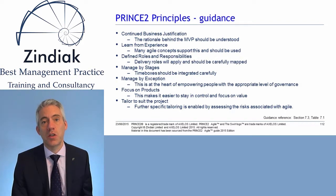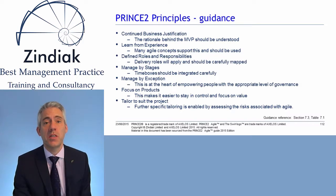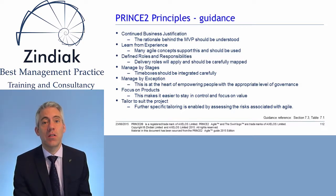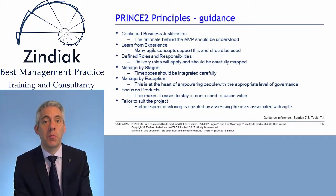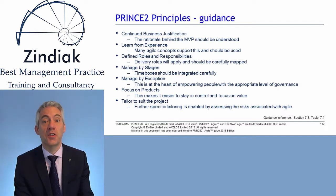On this slide we can see the seven PRINCE2 principles and we have some guidance against each one. Starting with continued business justification: the first thing to note is that Agile often uses the term 'value' rather than 'benefit', but they're synonymous for our purposes. We need to understand the rationale behind the minimum viable products. If the project delivers the minimum viable product and the business doesn't realise any value or benefit, that might indicate there is no continued business justification.